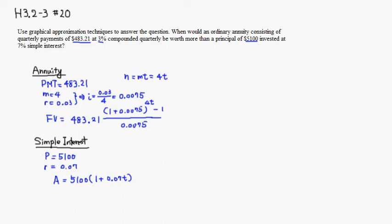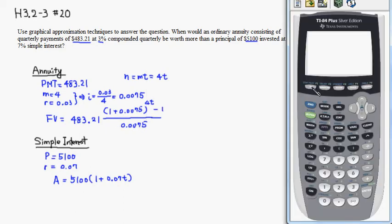So let's do that. So bring out a calculator. Hit the y equals. I'm going to type in the future value, so you have $483.21. Multiply by, put the double parentheses. You have 1 plus 0.0075. Raise it to the 4t, 4x power. Then minus 1, so minus 1, and close parentheses, and divide it by 0.0075. So hit enter.